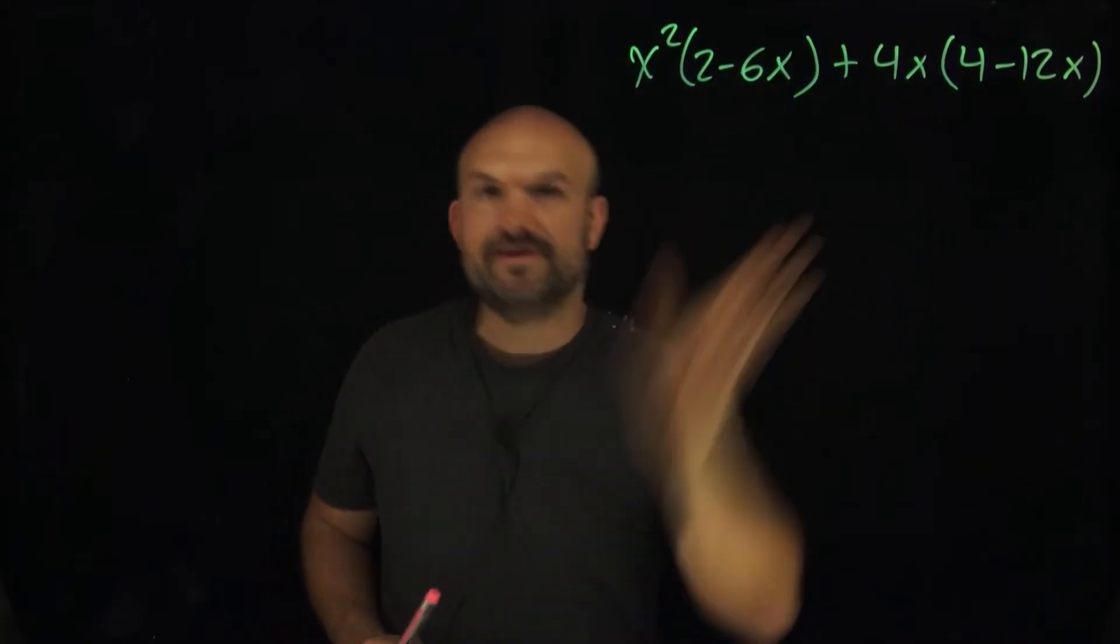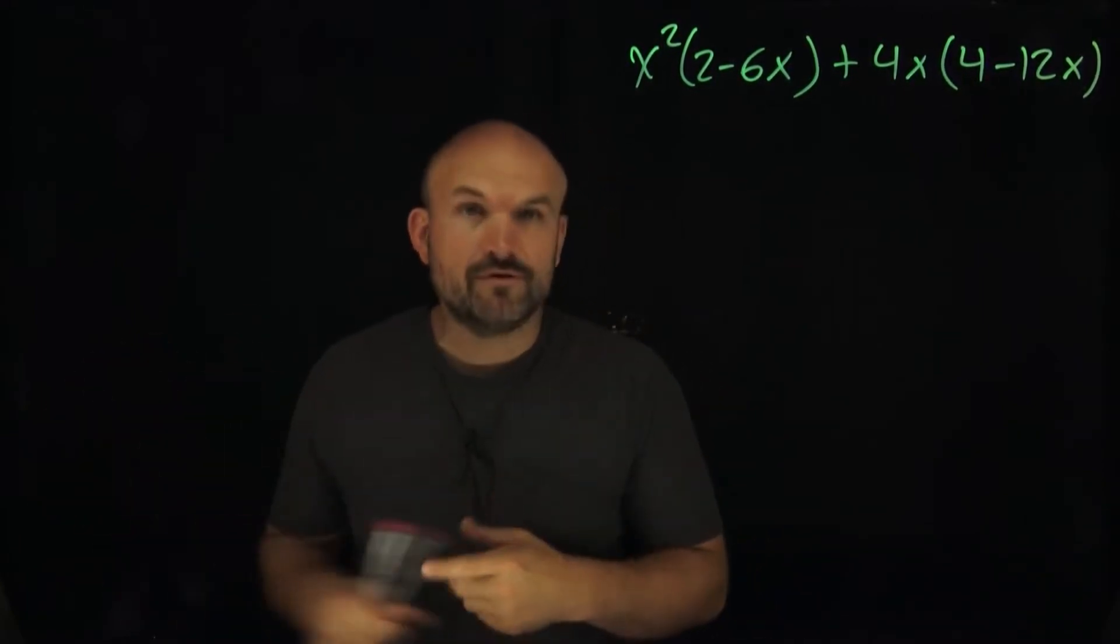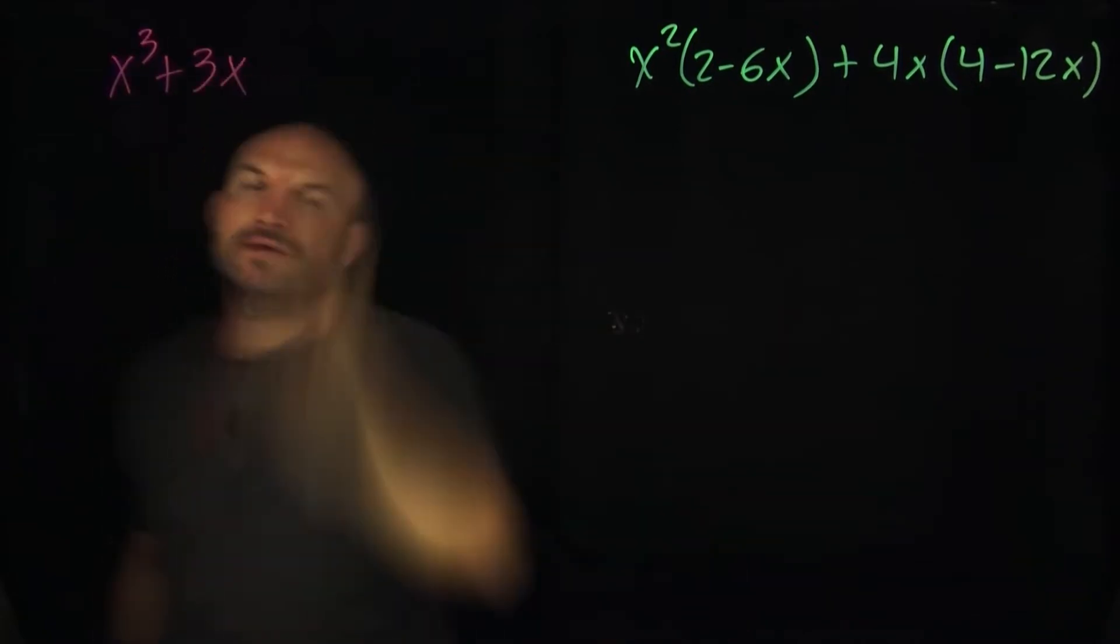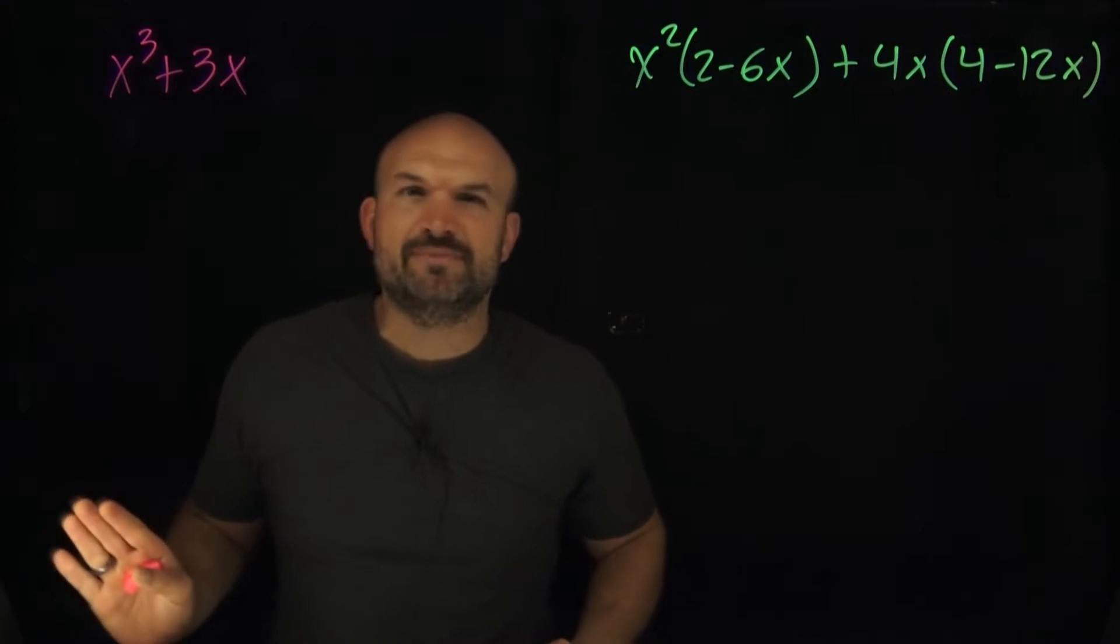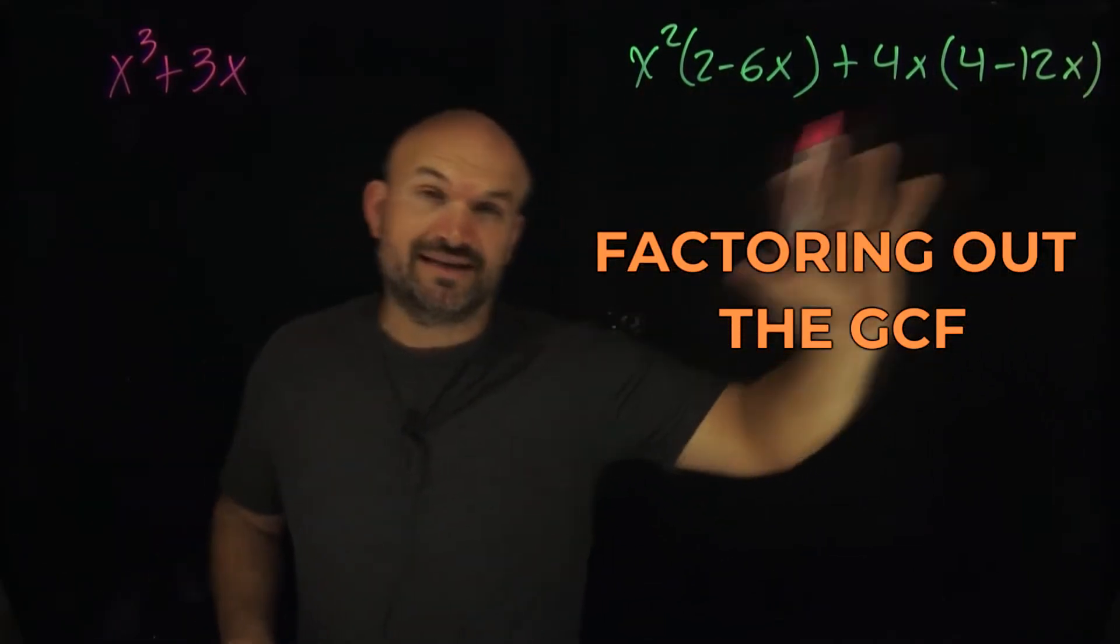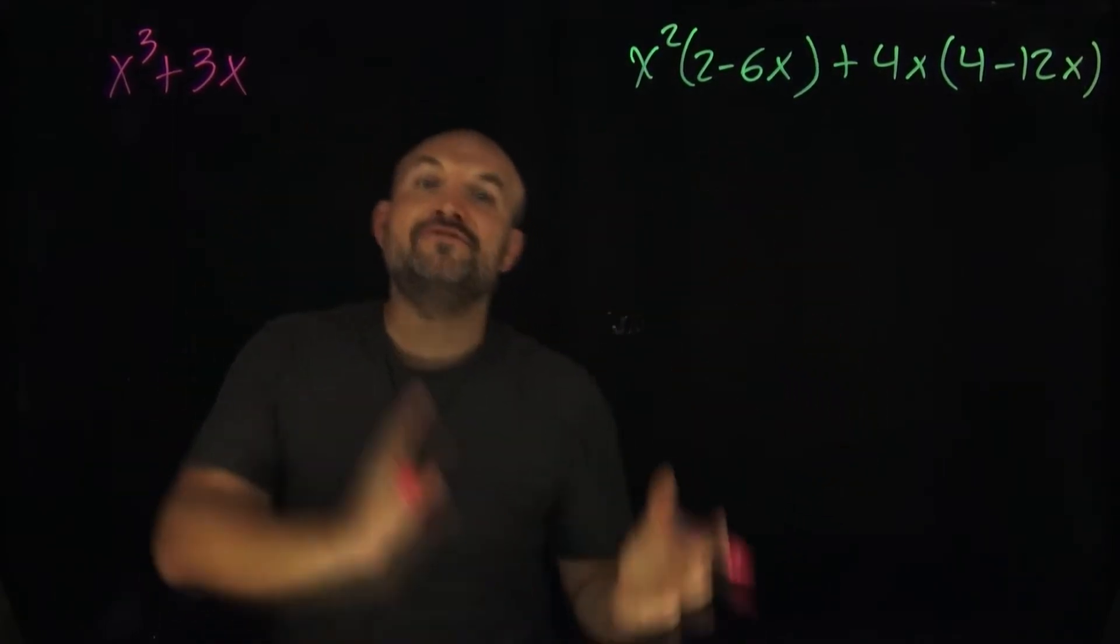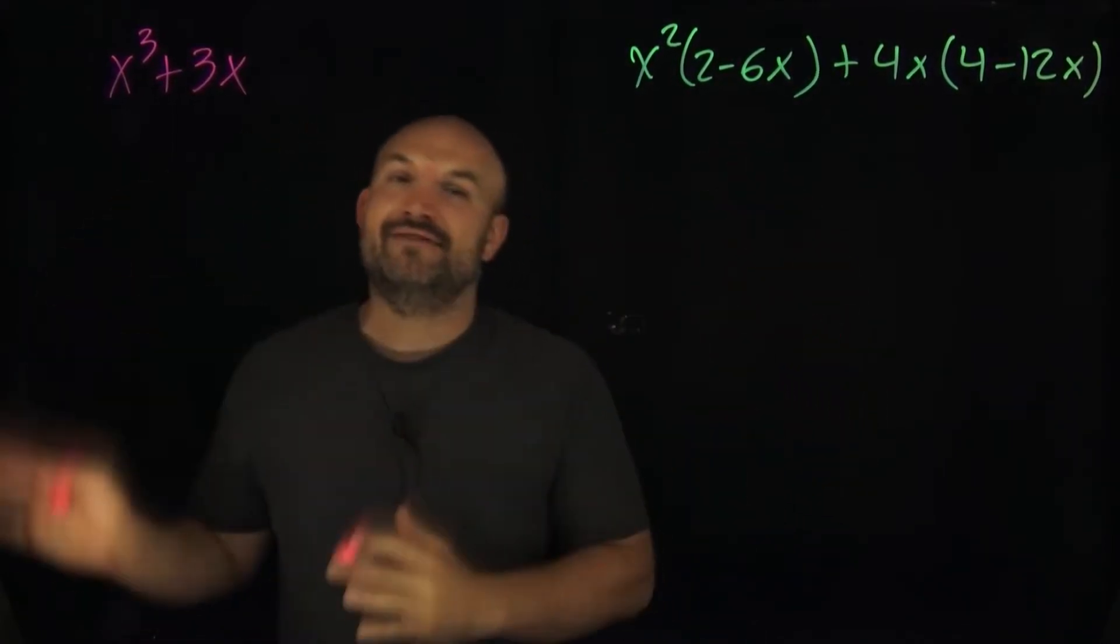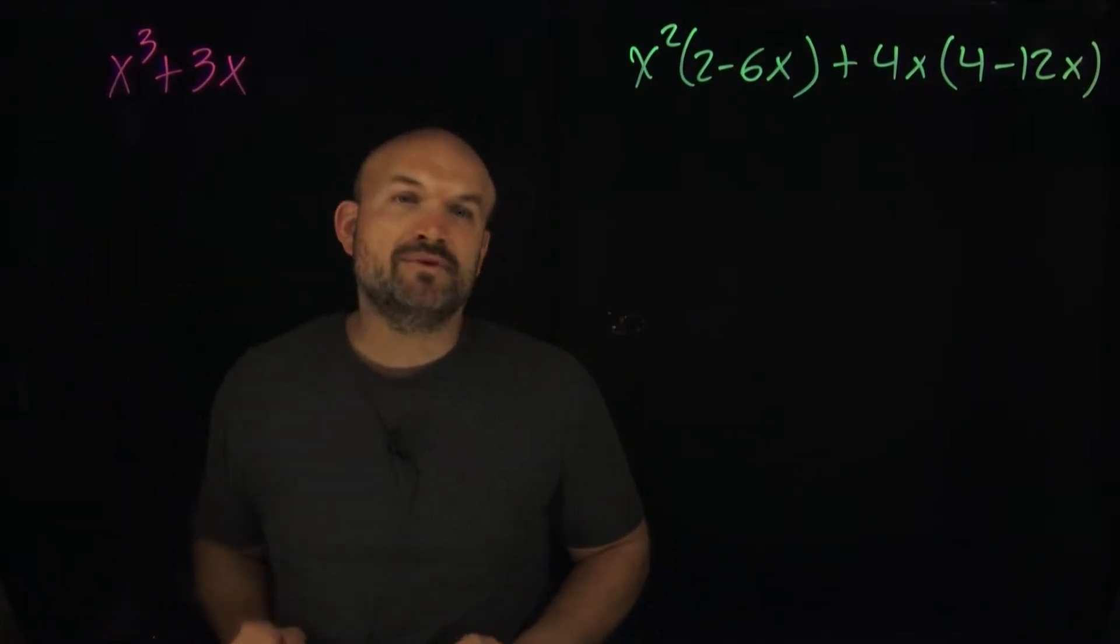Before we go ahead and finish this problem, I want to make sure you understand what exactly we're trying to achieve and what we're looking for by factoring by grouping. To do that, I want to talk about a quick review of the first step in factoring, which is factoring out the GCF. To get a problem that looks like that, you group the first two terms, you group the last two terms, and you factor out the GCF. We have a lot of words to describe what we're trying to achieve when we're factoring out the GCF, but sometimes it doesn't really make a lot of sense for students.